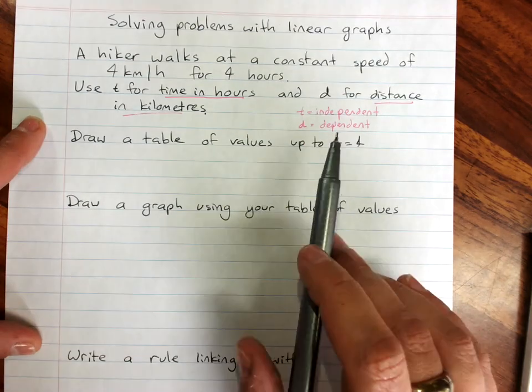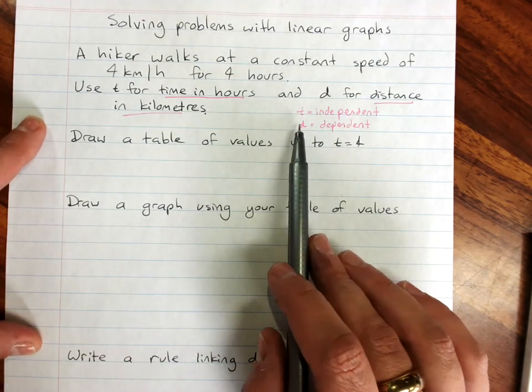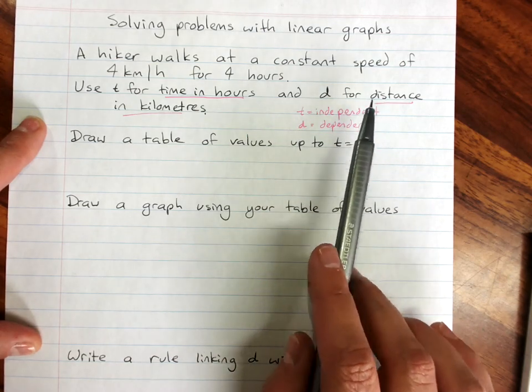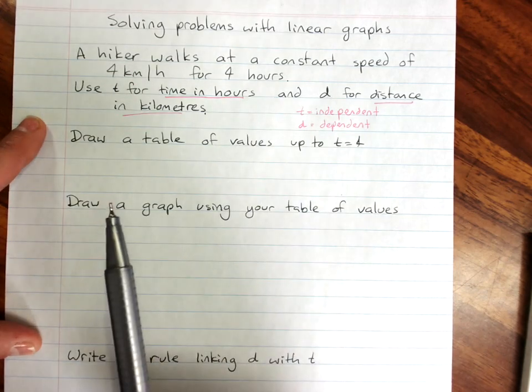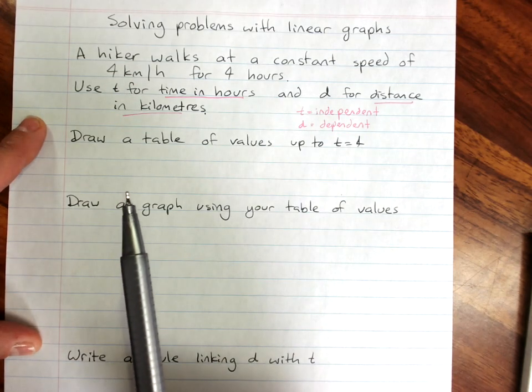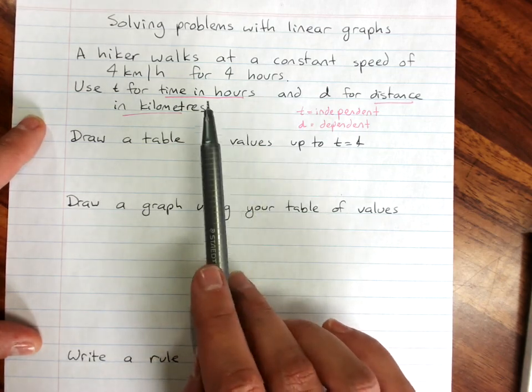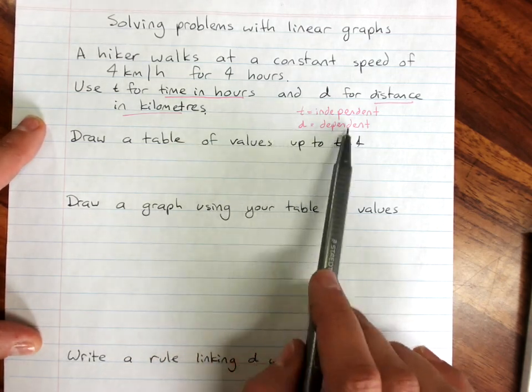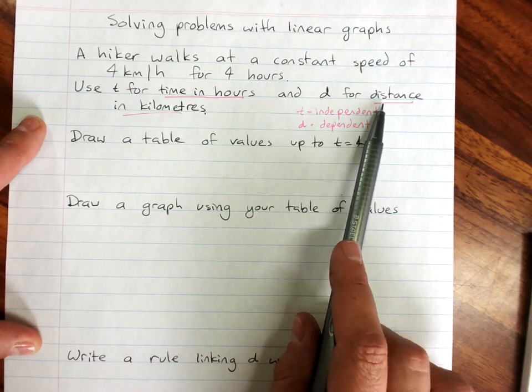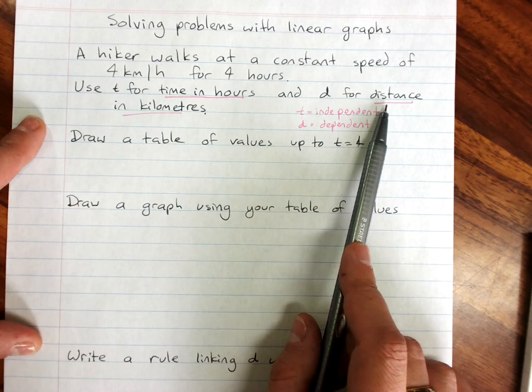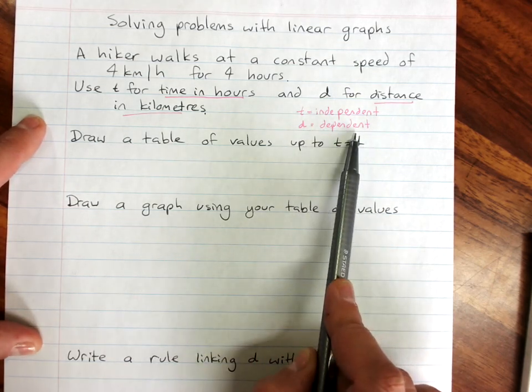Time is going to be your independent variable, and so distance will be your dependent variable. And it's going to be like that any time you've got distance and time. But just so we can see why, the distance you've traveled depends on how long you've been walking for. You don't say how long you've been walking for depends on the distance you've traveled. And when you hear that depends on, you know we've got dependent.